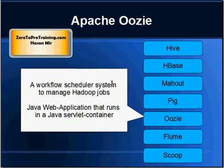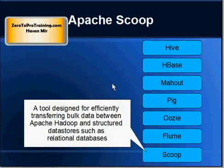Apache Oozie works as a workflow scheduler for Hadoop jobs. You can schedule jobs to run at certain intervals or at certain points in time. It is basically a Java-based application that runs in a Java servlet container.